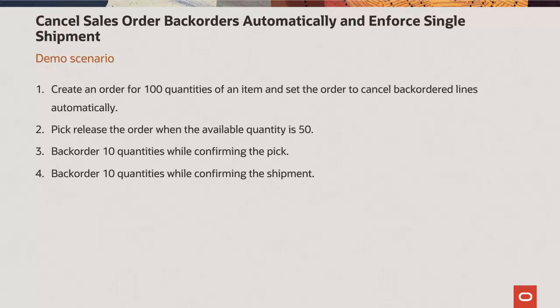Here is what I am going to show in the demo: create an order for 100 quantities of an item and set the order to cancel back ordered lines automatically. Then pick release the order when the available quantity is 50, back order 10 quantities while confirming the pick, and back order 10 quantities while confirming the shipment.